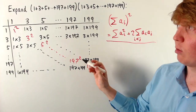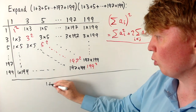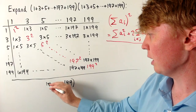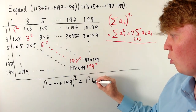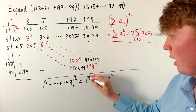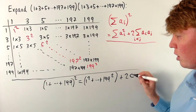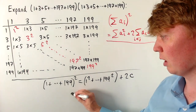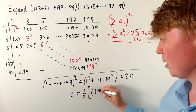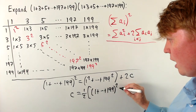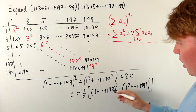Applying this identity: expanding (1 + 3 + ··· + 199)² equals the sum of all odd squares from 1² to 199², plus two times our coefficient c. This is a special case of the general identity: (∑aᵢ)² = ∑aᵢ² + 2∑_{i<j} aᵢaⱼ. Solving for c: c equals one half times (1 + 3 + ··· + 199)² minus the sum of all odd squares from 1² to 199².